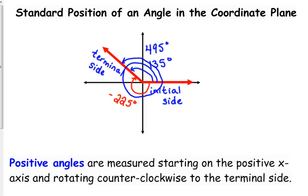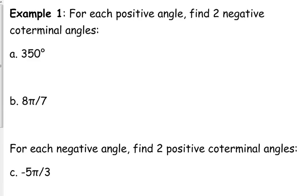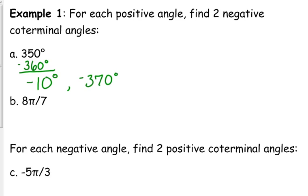I could have done the same thing in the negative direction. You can do multiple rotations in either direction. So we are going to find two negative co-terminal angles for these angles. For 350 degrees, the easy way is just to subtract 360 degrees. So negative 10 is one negative co-terminal angle. And if we need another one, we subtract 360 again, so negative 370 degrees is our other negative co-terminal angle.